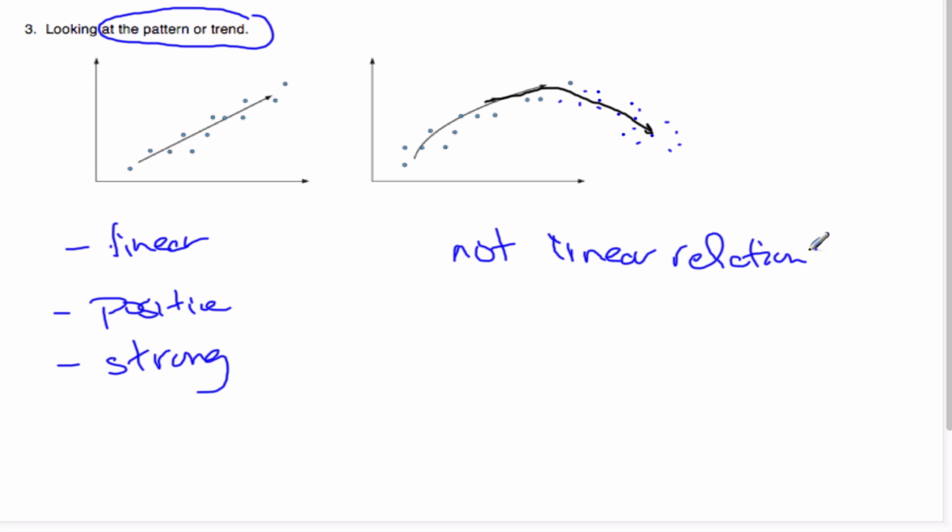And so, basically, at this point, we're only concerned with it's either linear or not linear. And if I just had a total random scattering of dots, again, that's a non-linear relationship.